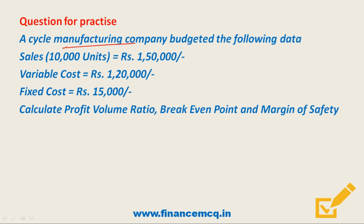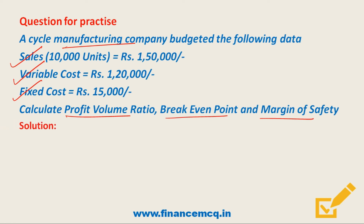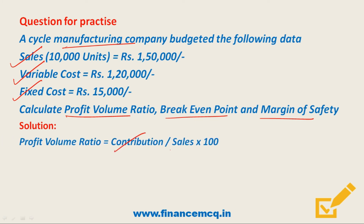In this example, Sales = ₹1,50,000; Variable Cost = ₹1,20,000; Fixed Cost = ₹15,000. We have to calculate the Profit Volume Ratio, Breakeven Point, and Margin of Safety. First, we will calculate the PVR. The formula for PVR is Contribution divided by Sales, multiplied by 100, so we first need to calculate Contribution.